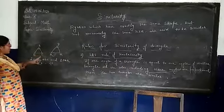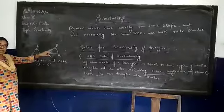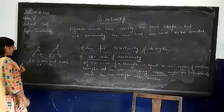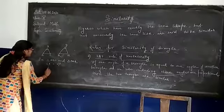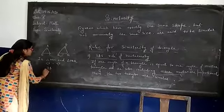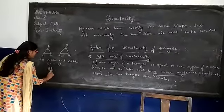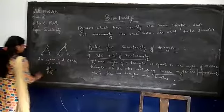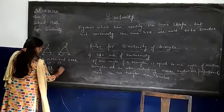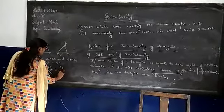So we take the sides containing angle A and containing angle P. Now here we have AB proportional to PQ and AC proportional to PR.